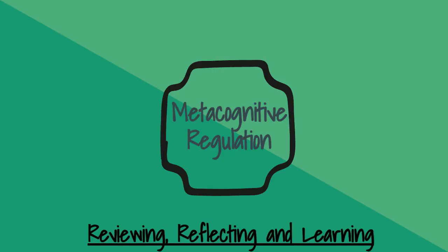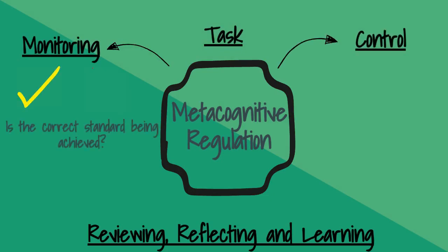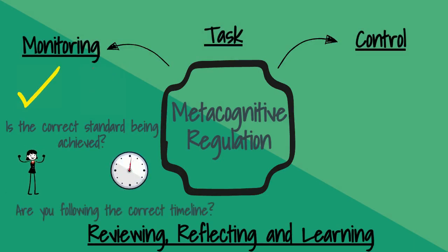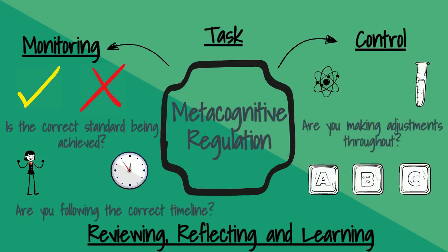Metacognitive regulation is all about task monitoring and task control. Monitoring if the task is being completed to the correct standard, monitoring if it is being completed to the correct timeline, and controlling and making adjustments to your cognitive skills and learning strategies if needed.